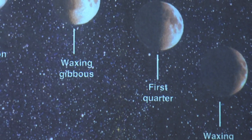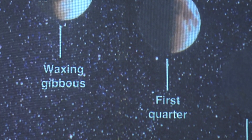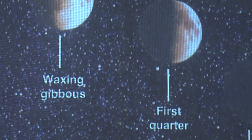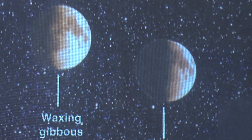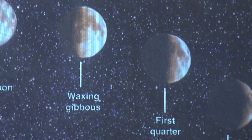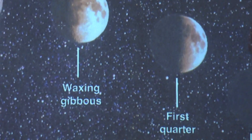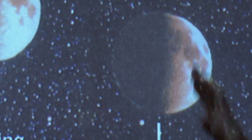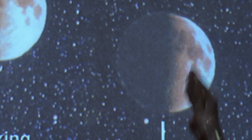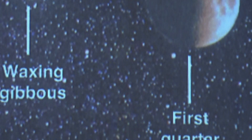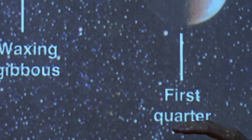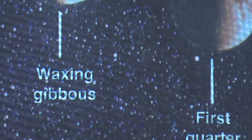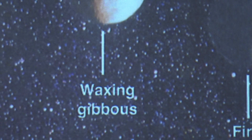The thin light part of the moon that we can see after two days — this phase is called crescent moon, or crescent phase. About one week after the new moon, we see the moon like a half circle, and this phase is called first quarter.